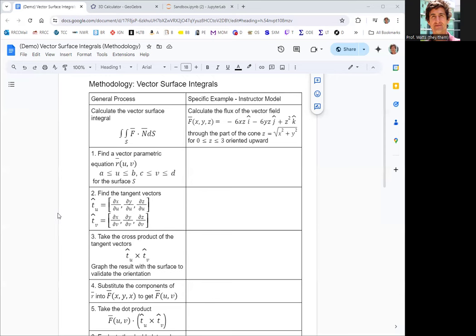The surface we are integrating for this example is part of the cone z equals square root of x squared plus y squared for z between zero and three. And when you do these flux integrals, you need to specify which way the surface is oriented. This one is oriented upward.